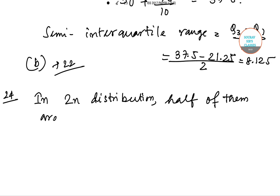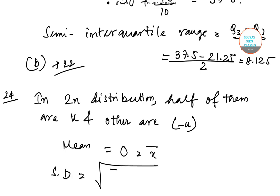So in 2N distribution, half of them are K and others are minus K, so the mean will be 0, that is x̄ equals 0. Standard deviation equals √(Σ(x - x̄)²/N).